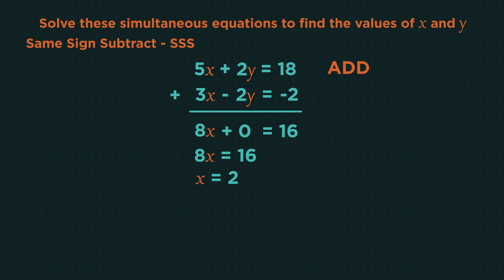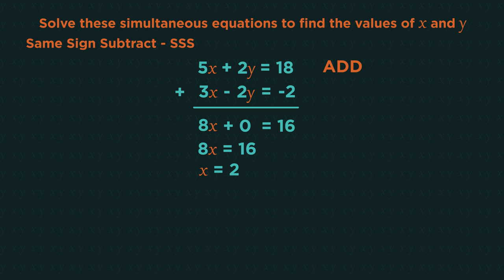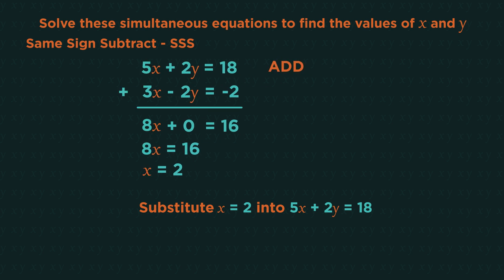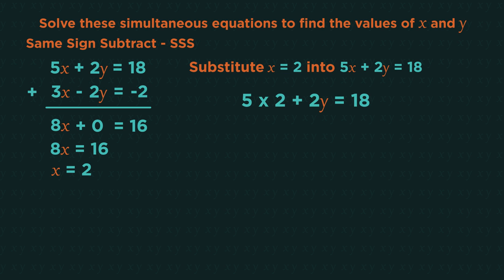Now we need to find the corresponding y value. Choose either one of the starting equations. So I'm going to choose the top one. Substitute x is 2 into this equation. 5 multiplied by 2 add 2y equals 18. And solve the equation. 2y equals 8, y equals 4. So when x is 2, y is 4. This is the solution to these simultaneous equations.